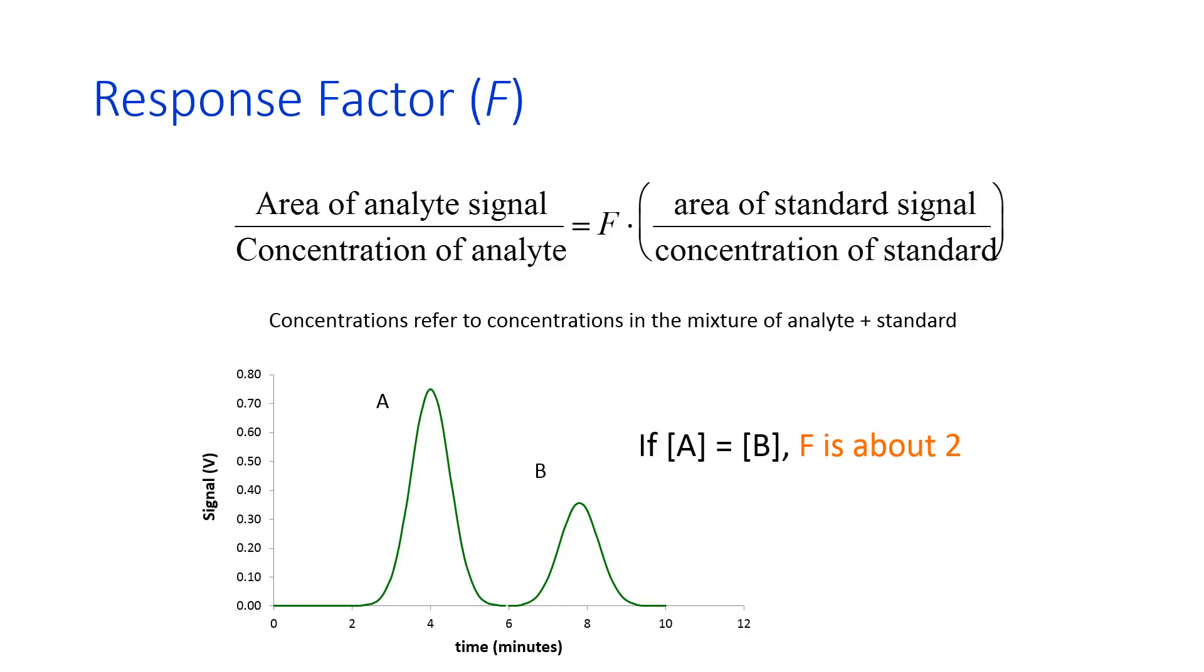Then if you know the concentration of B in a different sample, you can figure out the concentration of A by rearranging the equation above and solving for concentration of analyte.